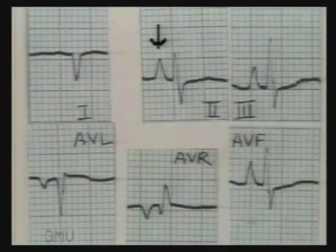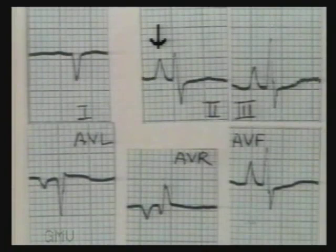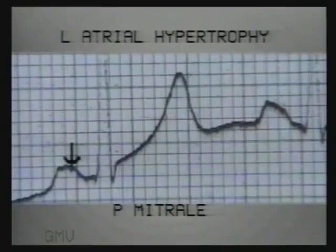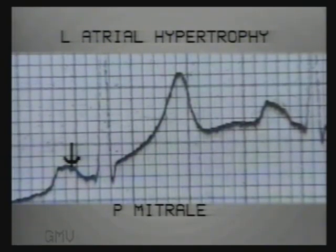This ECG shows tall and peaked P waves in leads 2, 3, and AVF — this is typical P pulmonale. This is P mitrale: no notch, but 2.5 small squares wide, suggesting left atrial hypertrophy.